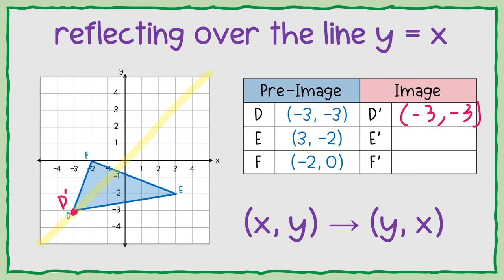Okay, point e, for e prime, it's going to be negative 2, 3, which is up here.